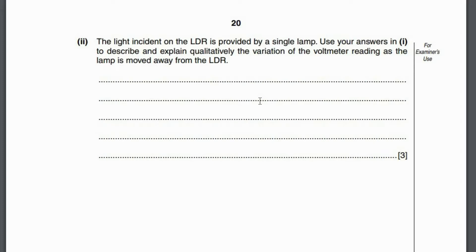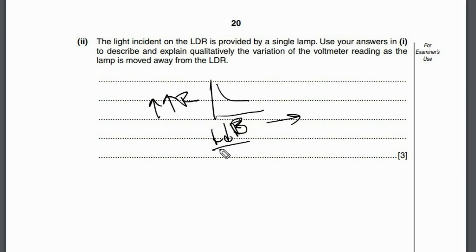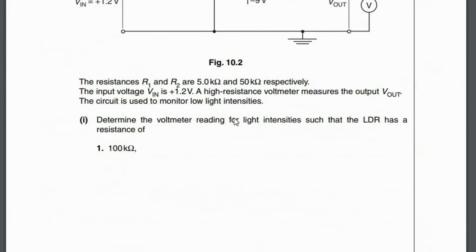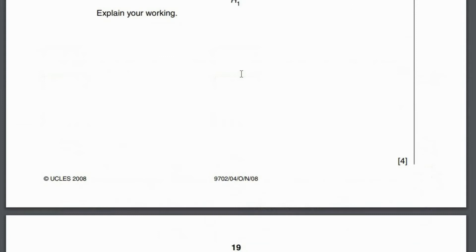As the lamp moves away from the LDR, the intensity of light falling on the LDR decreases. As intensity decreases, the resistance of the LDR increases, which increases the feedback resistance. From G = −R2/R1, the gain magnitude increases, so the output voltage becomes more negative in magnitude — the voltmeter reading becomes more negative.